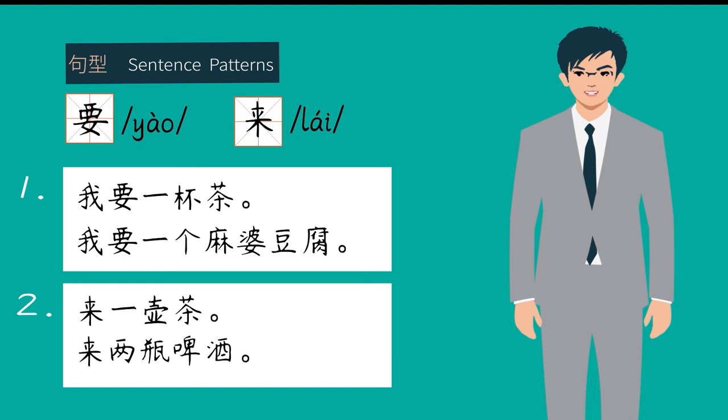But please note that you can say 我要一杯茶 to your friend because you can express your need to your friend. But you cannot say 来一杯茶 to your friend. You can just use it to the waiter or waitress because your friend doesn't bring the tea to you.